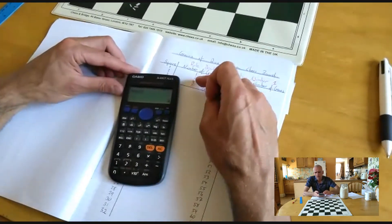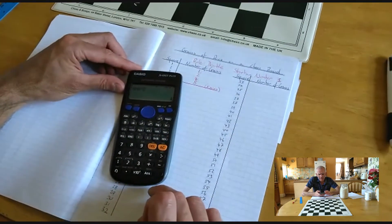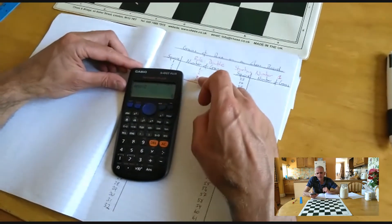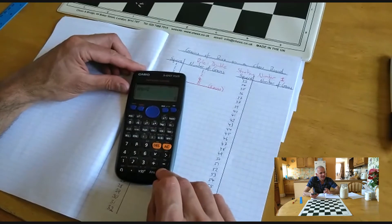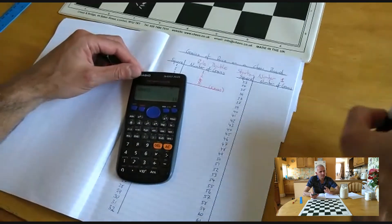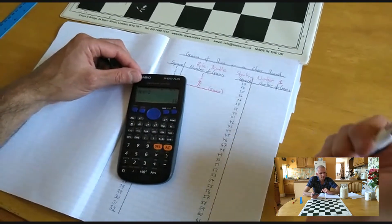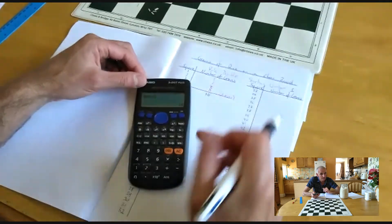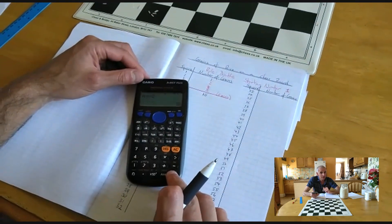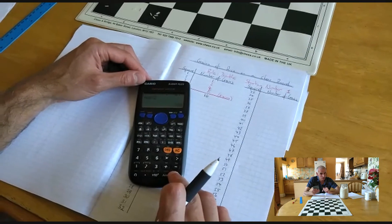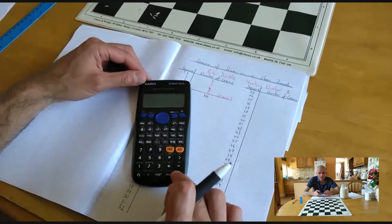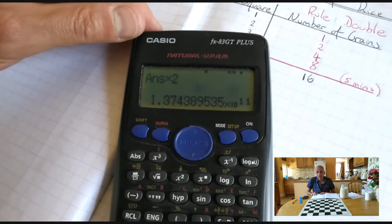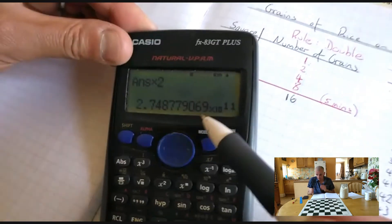Take it as far as you can. Something weird happens on your calculator at some point — something strange is going to appear — and I want you to think about what's going on there. Can you explain what's happening on your calculator? Something a bit odd happens, so try to use your calculator to complete the table.